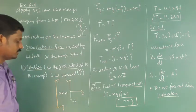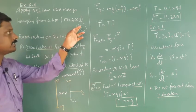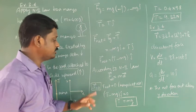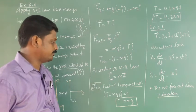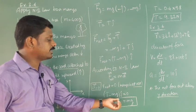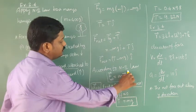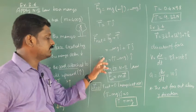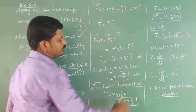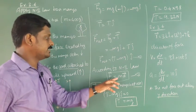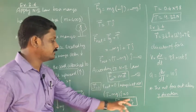According to Newton's second law, force equals mass times acceleration. The mango is at rest in the tree, so acceleration is zero, meaning the net force is zero. Equating: T minus mg equals zero, therefore T equals mg.